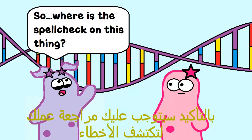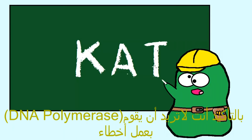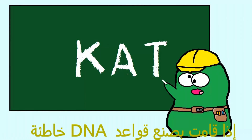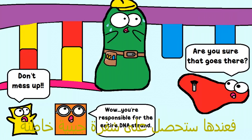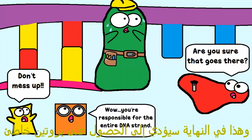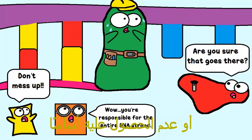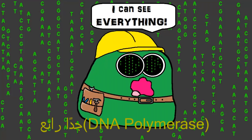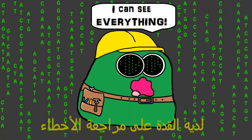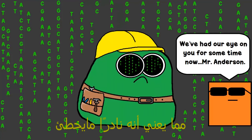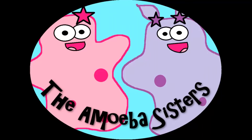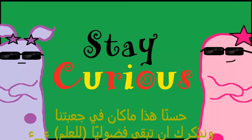Oh, one last thing. Surely you have had to proofread your work before to catch errors. Well, you definitely don't want DNA polymerase to make an error. If it makes the wrong DNA base, then you could have an incorrectly coded gene, which could ultimately end up in an incorrect protein — or no protein. DNA polymerase is just awesome. It has proofreading ability, which means it rarely makes mistakes. And that's a good thing. Well, that's it for the Amoeba Sisters, and we remind you to stay curious.